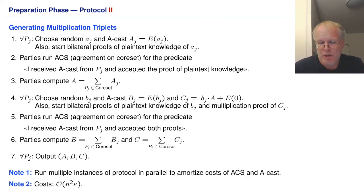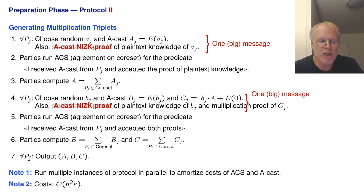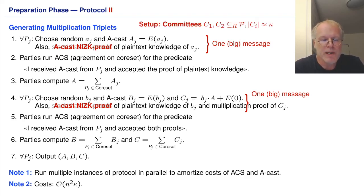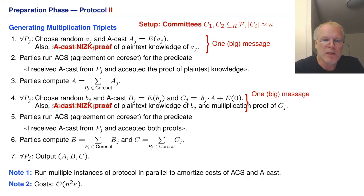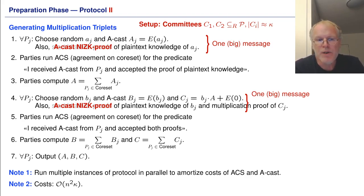Now we want to achieve linear communication complexity. First, we replace the bilateral proofs with non-interactive zero-knowledge proofs, which means each party will just ACAST one big message. Furthermore, we assume that in the setup two committees are given — two sets C1 and C2, random subsets of the party set where the size of each committee is approximately k. Each party knows if it is in a committee, but parties not in a committee do not know who is in the committee.